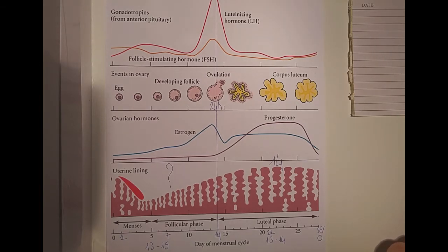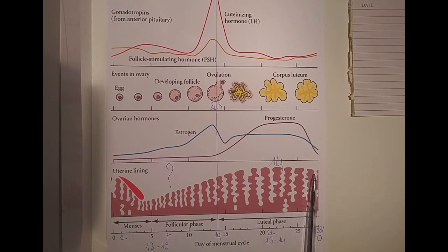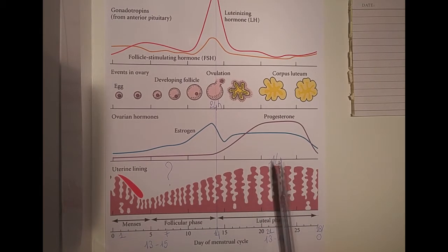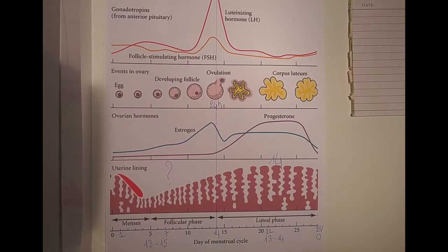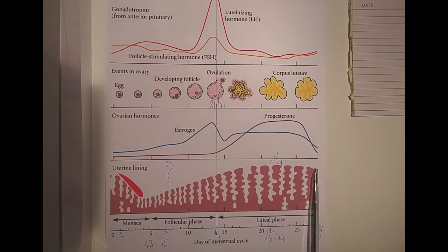Another important thing progesterone does is enrich the endometrium with blood vessels. So the first phase is about growth of the uterine lining, and the second phase is about development — specifically an enrichment of blood vessel presence inside the uterine lining, also in preparation for possible implantation.